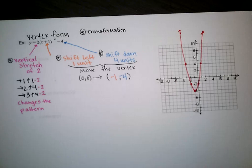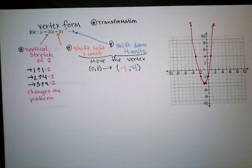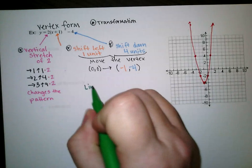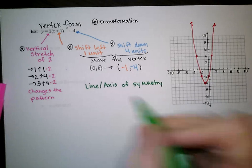The line of symmetry, or axis of symmetry — those are the same thing. It is a vertical line that goes through the vertex, so it has to be x equals the x-coordinate of the vertex: x equals negative 1.